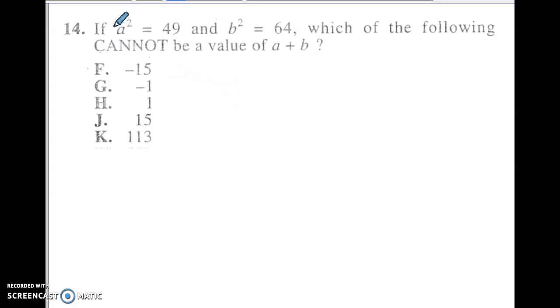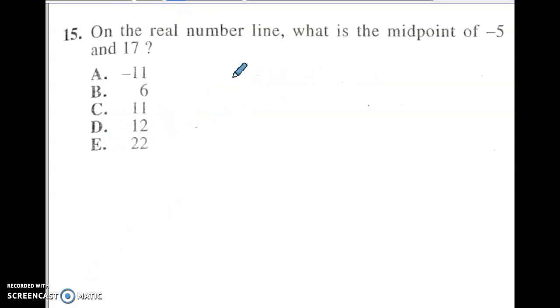All right, a little bit weird style question, but pause it, see if you can make some sense of it. All right, so on this one, if we do the square root, the key is you've got to remember there's two answers to a square root. So besides being 7 for A, it can also be negative 7. And for B, it can be both 8 and negative 8. So what is not possible? So it cannot be a value. So negative 15 could be if we added negative 7 and negative 8. Negative 1 is possible. If we did negative 8, positive 7. Same thing with 1. 15 would be fine, 7 and 8. You could add them together, but there's no way you could add them to get 13. So the one that cannot be is 13.